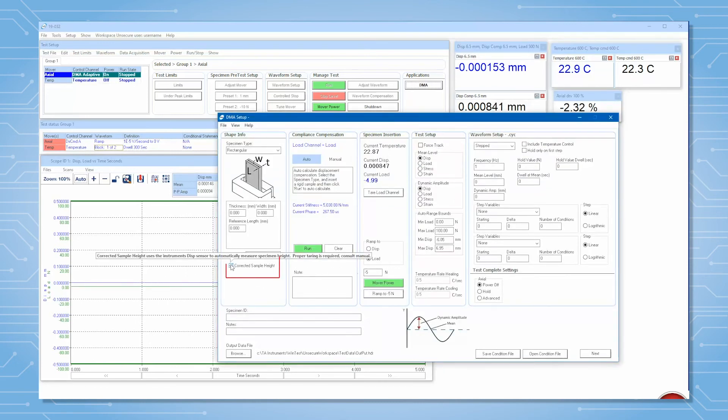In the DMA application, check the corrected sample height option and type in the height of the standard block. After completing this step, you should not unlock column clamps or use micro adjust anymore. The software will now automatically calculate your sample's length.